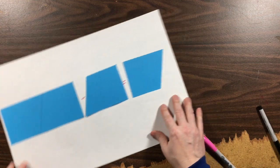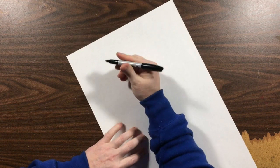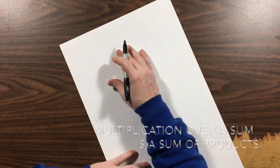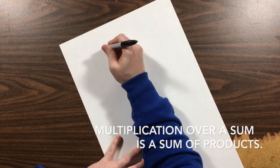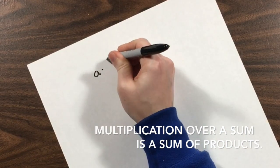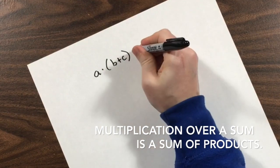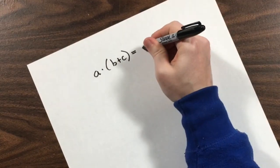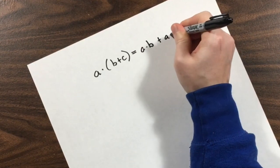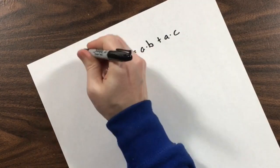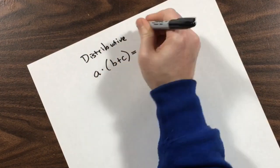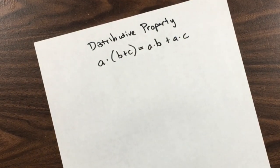From algebra, we need something else. Algebra is using these algebraic symbols to represent meaningful scenarios. But from algebra, we need to understand that multiplication over a sum is a sum of products, or more precisely, a number multiplied by a sum, b and c in this case, is equal to a sum of products. In this case, that would be a times b added to a times c. This is also known as the distributive property.